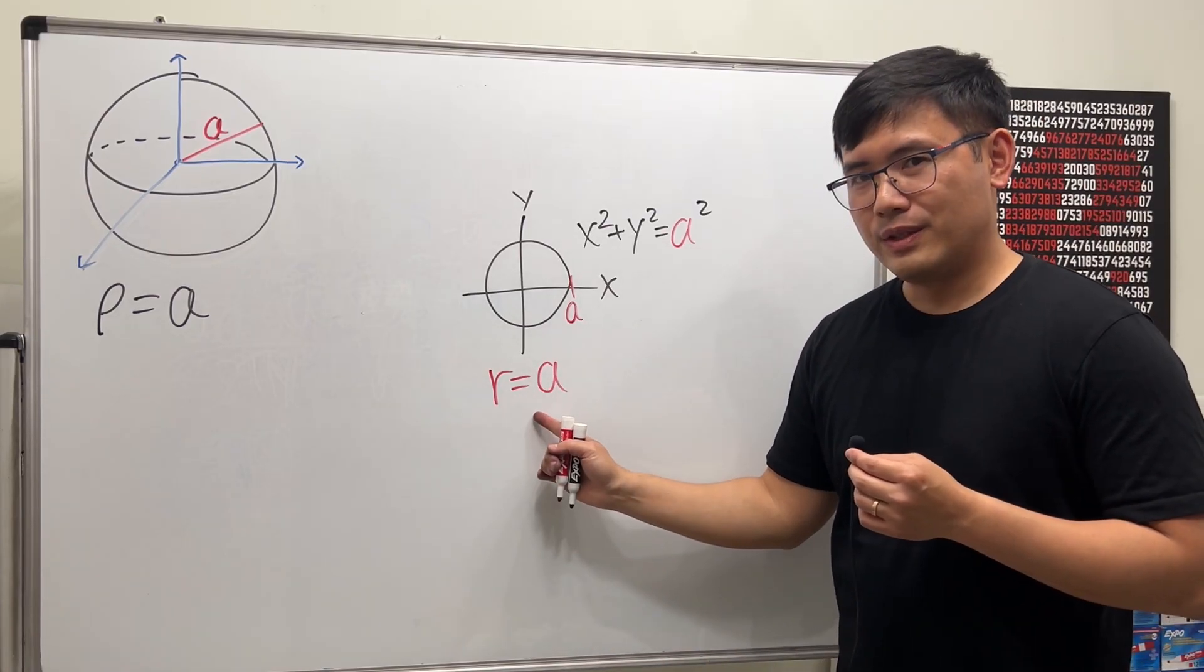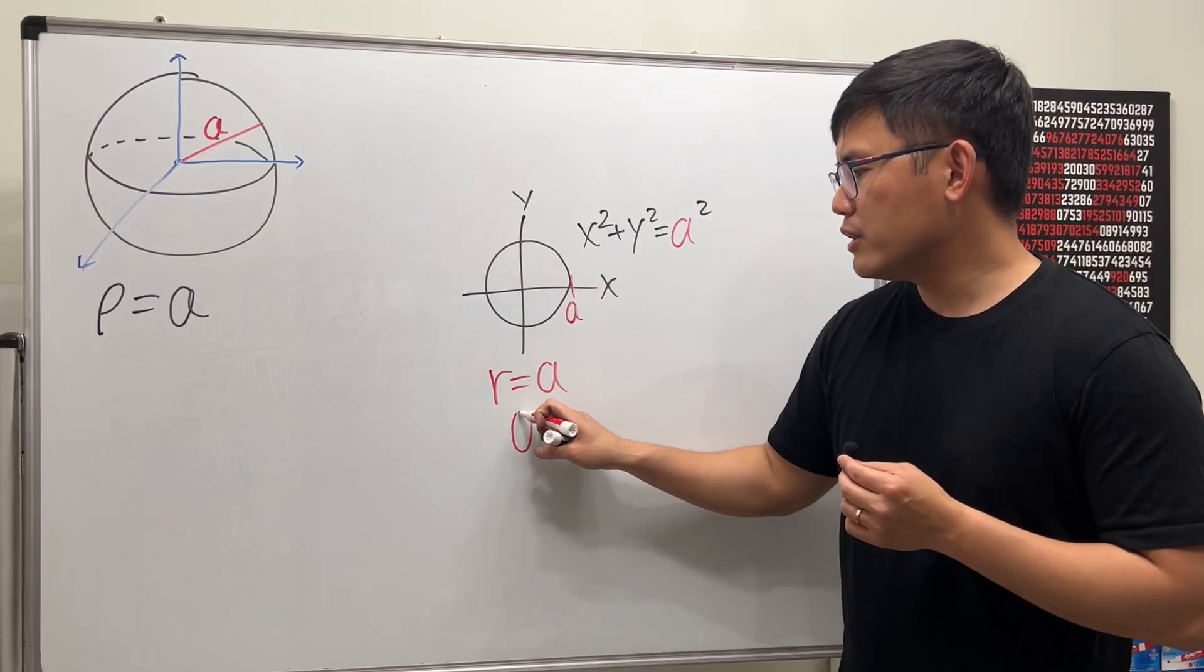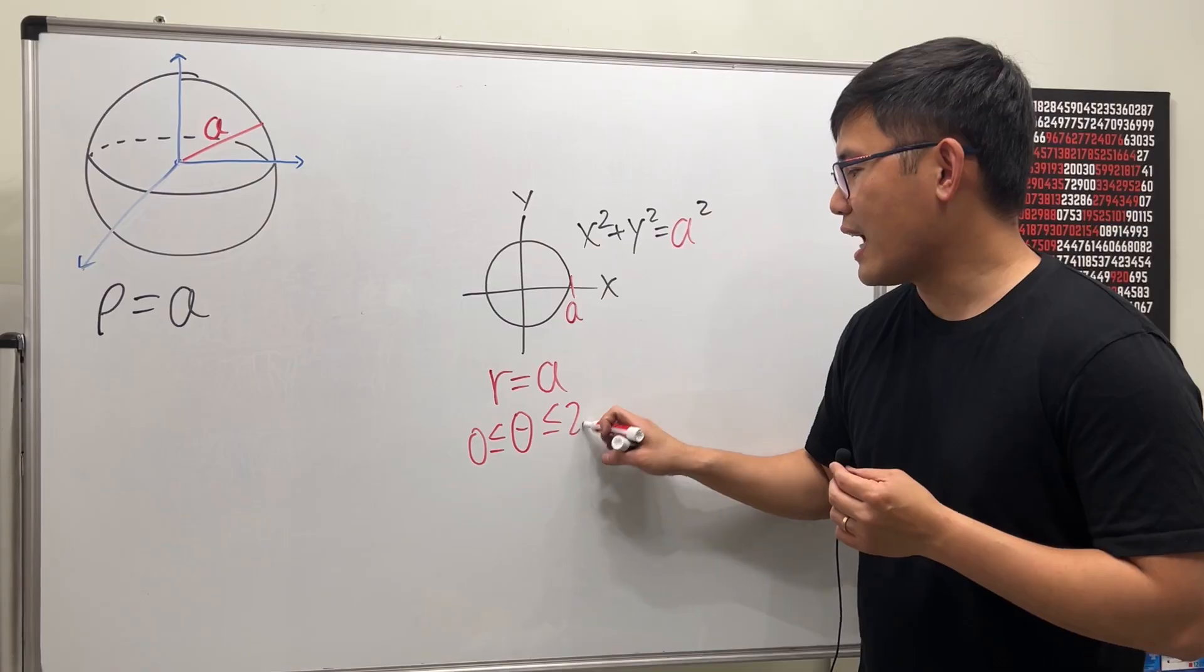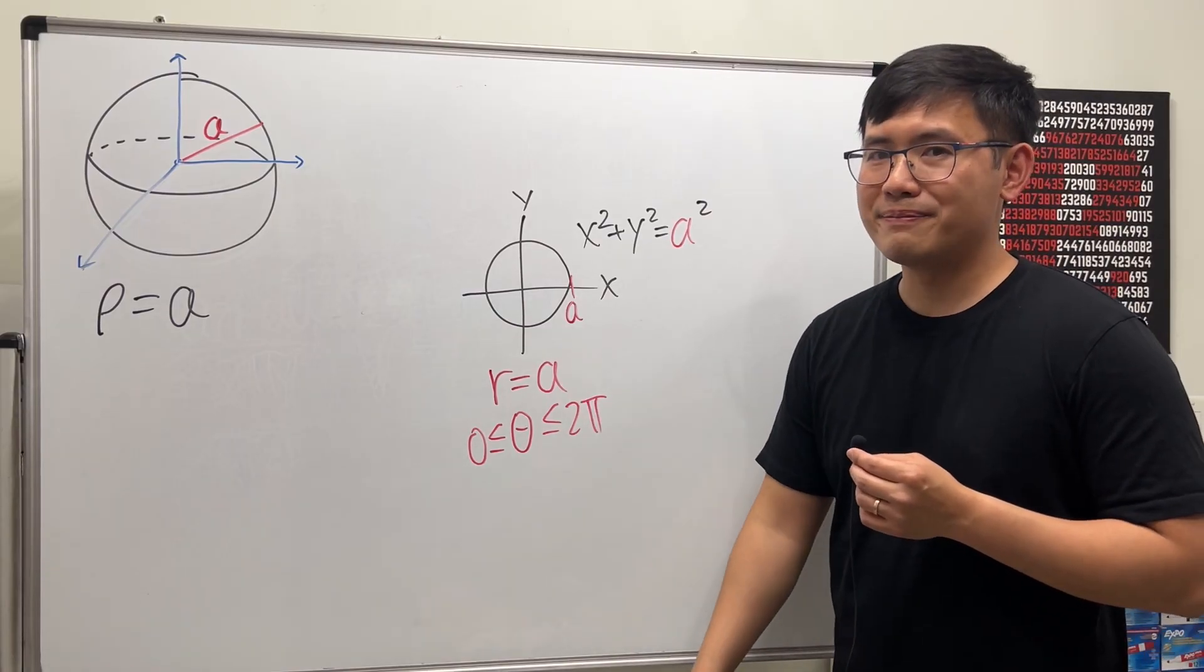But of course, when r is equal to a, you also have to mention that the angle theta, you rotate it one time. So from 0 to 2π.